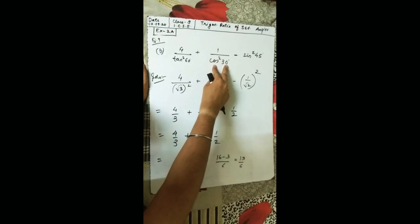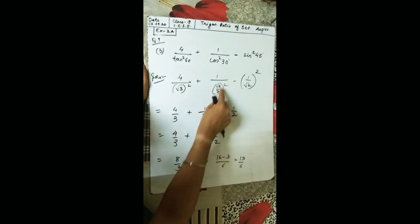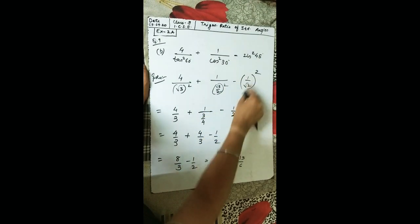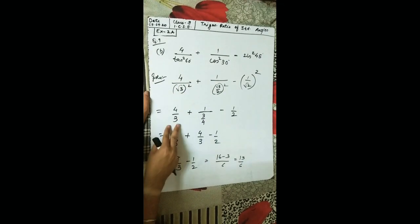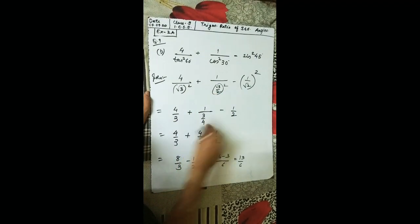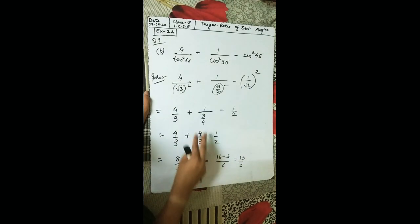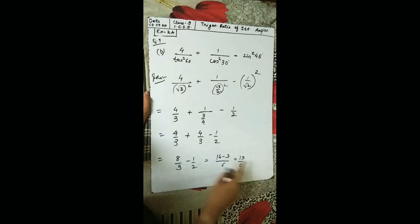Continuing question 9B: 4/3 + 4/3 − 1/2 = 8/3 − 1/2. Solving with LCM: (16 − 3)/6 = 13/6. So the answer is 13/6.